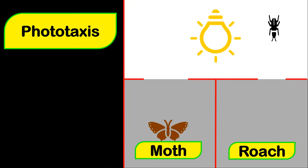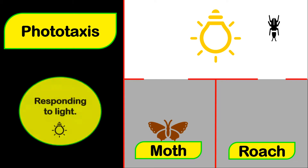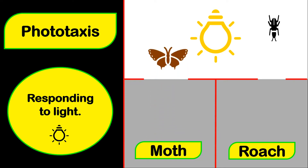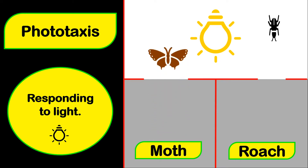Let's look at phototaxis first. Phototaxis, as the word suggests, is responding to light. For example, a moth will move towards the light, and so a moth displays a positive phototaxis response.